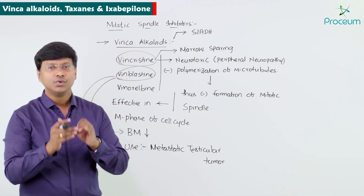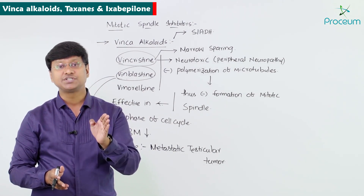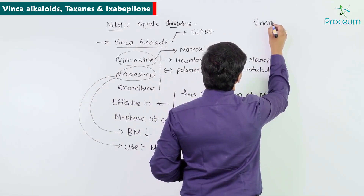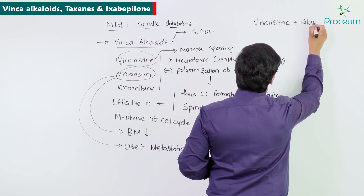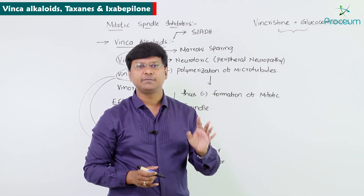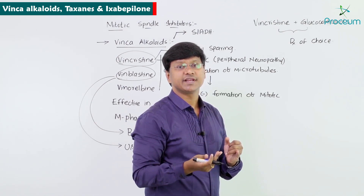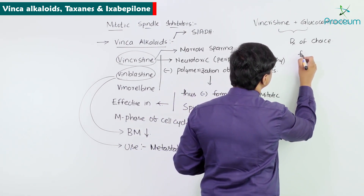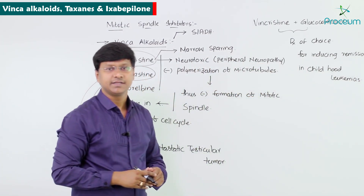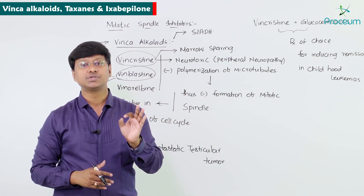Vincristine combined with glucocorticoids is the treatment of choice for inducing remission in childhood leukemias. This combination — vincristine plus glucocorticoids — is considered the treatment of choice for inducing remission in childhood leukemias.